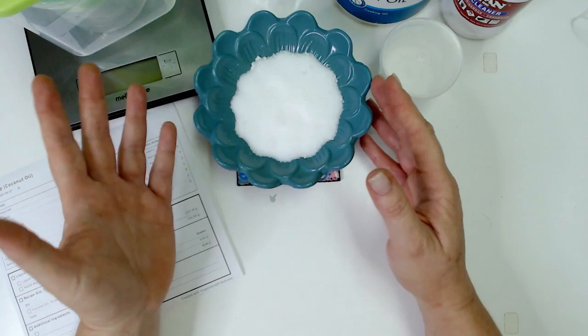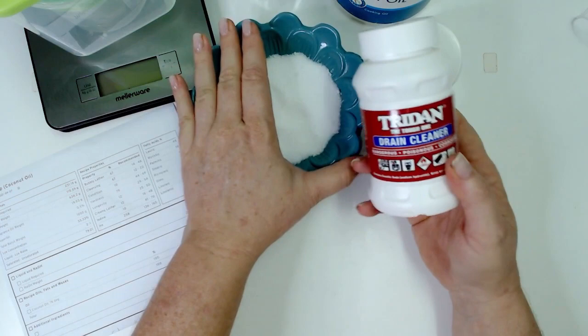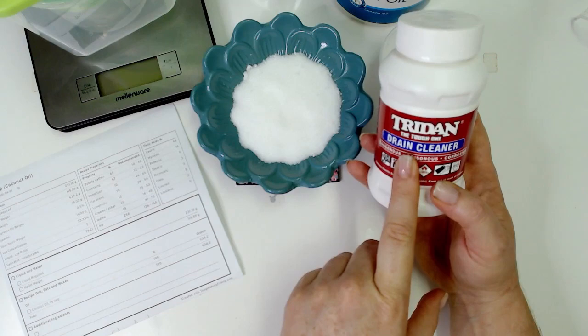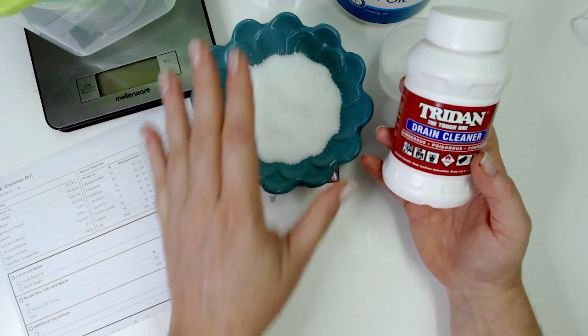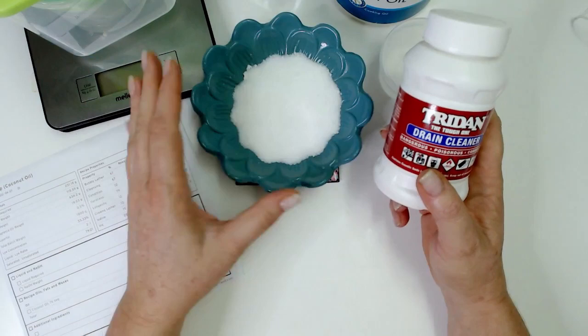Now when you are using citric acid, 10 grams of citric acid is going to neutralize 6.24 grams of sodium hydroxide. Or if you are using potassium hydroxide, then 10 grams of citric acid will neutralize 8.42 grams of potassium hydroxide. So you need to keep that in mind when you formulate your recipe because for every 10 grams of citric acid you use in your recipe you need to add extra sodium hydroxide or potassium hydroxide.